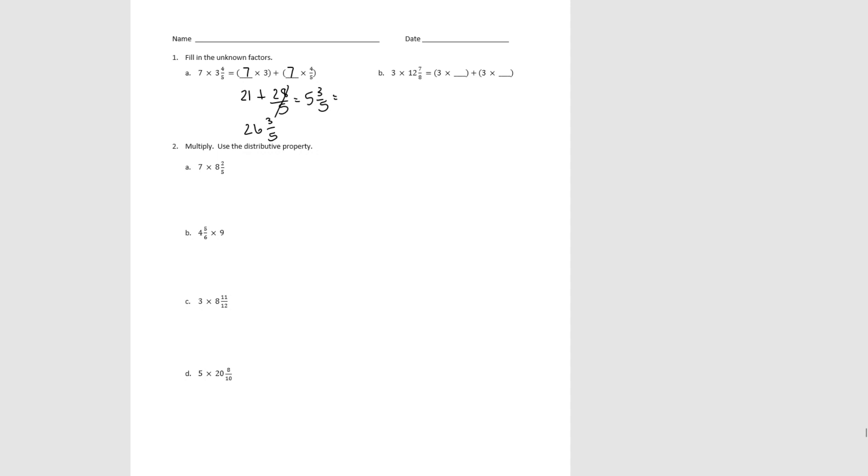For B, we have 3 times 12 and 3 times 7 eighths. When we multiply, 3 times 12 is 36 and 3 times 7 eighths would be 21 eighths. We'd decompose into 2, which would use 16 of the eighths with 5 eighths left. Then when we add together, we'd get 38 and 5 eighths.